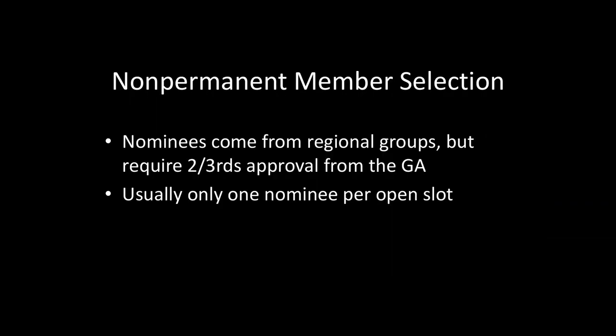So that's the makeup of the Security Council. But how do you actually get on there as a non-permanent member? Well, it's a two-step process. Nominees come from regional groups, but then require a two-thirds supermajority approval from the General Assembly to get that two-year term as a non-permanent member. For example, Mexico is currently a non-permanent member. To get there, it first had to convince its Latin American group to nominate it, and then once that nomination came up, two-thirds of the General Assembly had to vote yes. What's interesting is that we usually only see one nominee per open slot, so the two-thirds approval tends to be a rubber stamp.